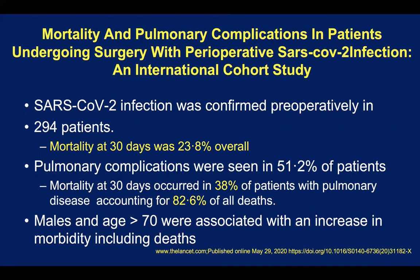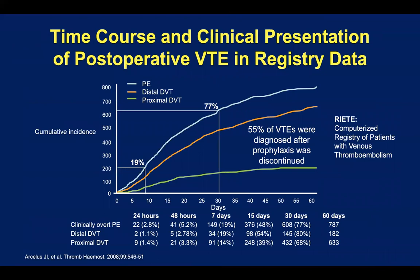There are also dangers of doing surgery in COVID patients. In one study of patients with confirmed infection preoperatively who still required surgery, mortality at 30 days was almost 23%. Pulmonary complications were seen in half the patients, with 38% mortality in that group, accounting for 82% of all deaths. Males and those aged 70 were associated with increased morbidity and deaths — Caprini score factors. From the RIETA database of patients with proven DVT, three-quarters got their clot after leaving the hospital, and half once anticoagulation was stopped. Increased Caprini scores should be used in those patients with high scores.